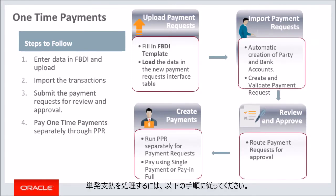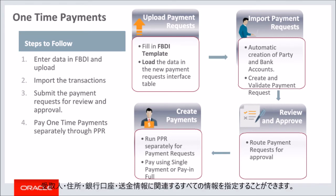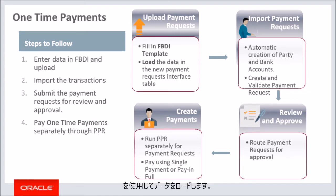Follow the steps below to process one-time payments. Prepare the data using the FBDI template. You can specify all information related to the payee, address, bank account, and remittance information in this template. Generate the CSV file. Load the data using the schedule process load interface data for import. Import the data using the import payables payment requests schedule process.